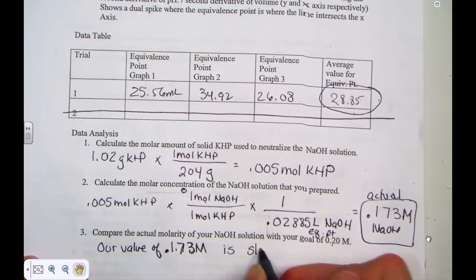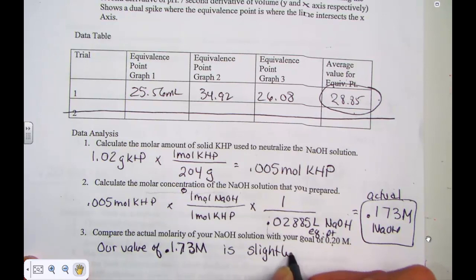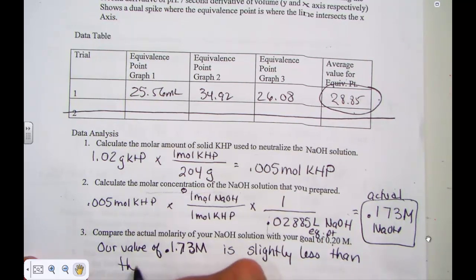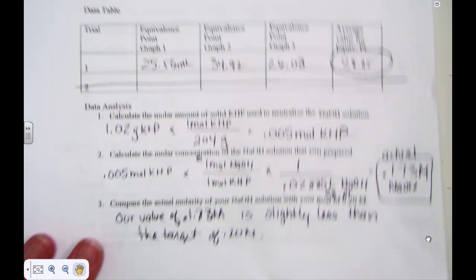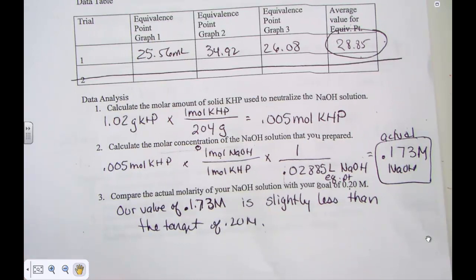0.173 molar is slightly less than the target of 0.2 molar. And again, that is well explained and it's well expected since the NaOH had water adding to its weight.